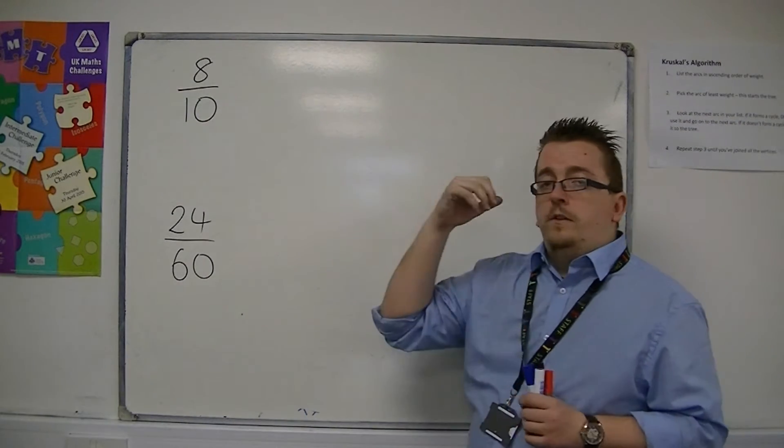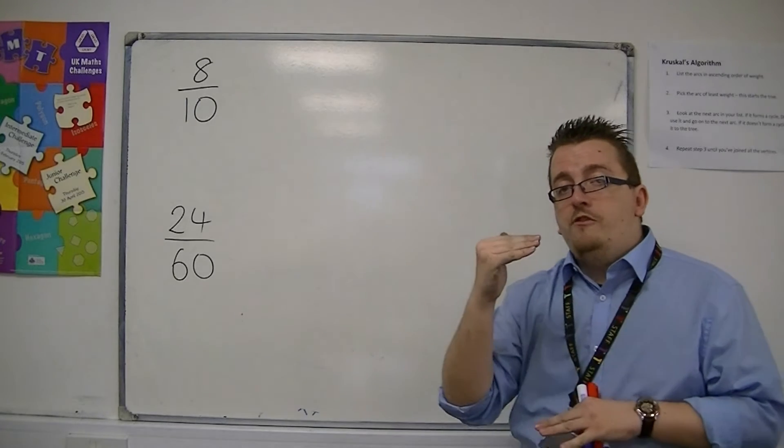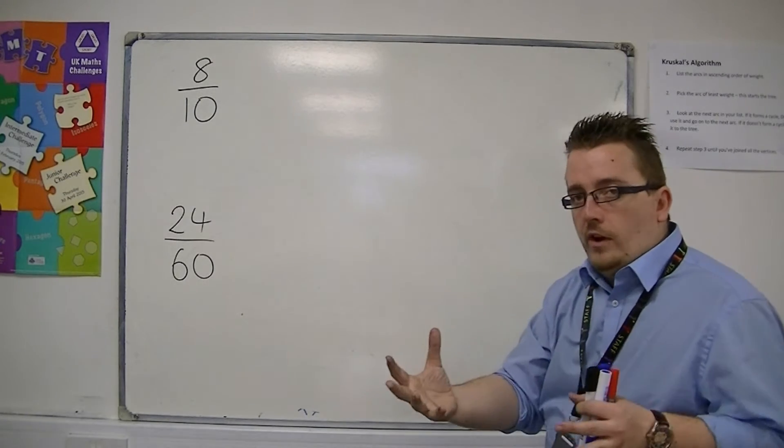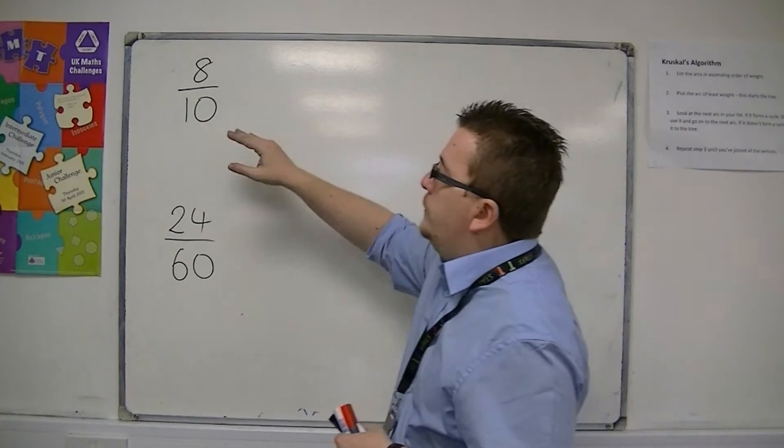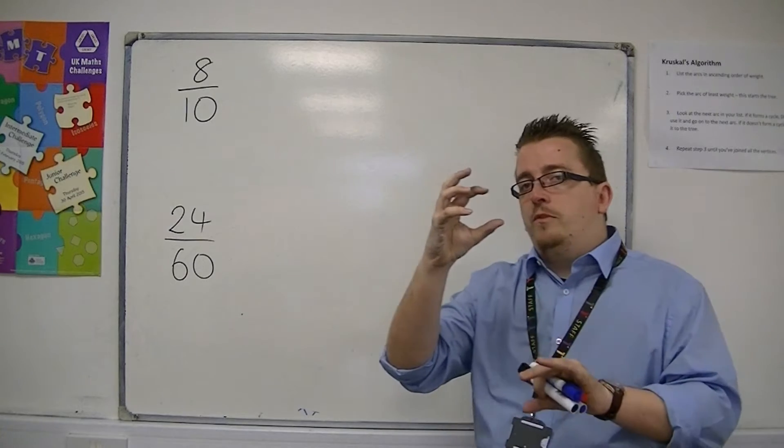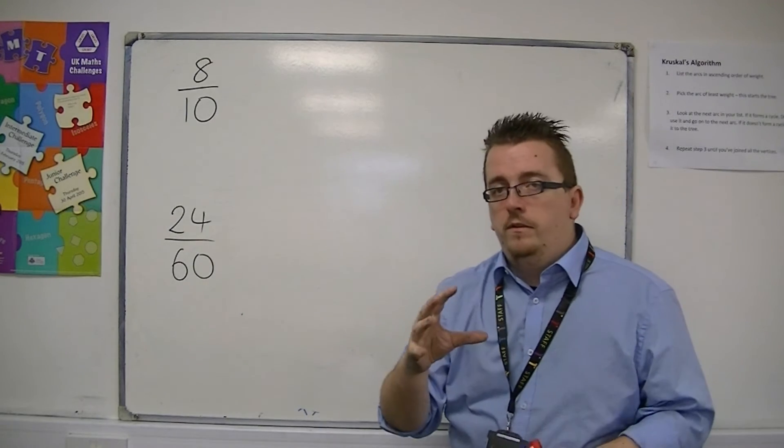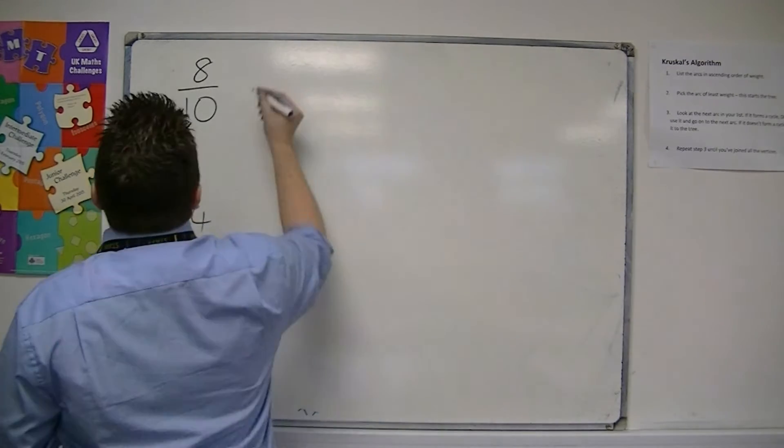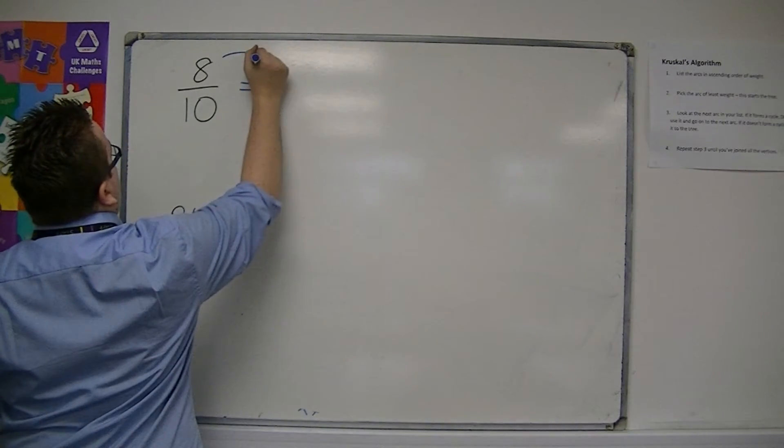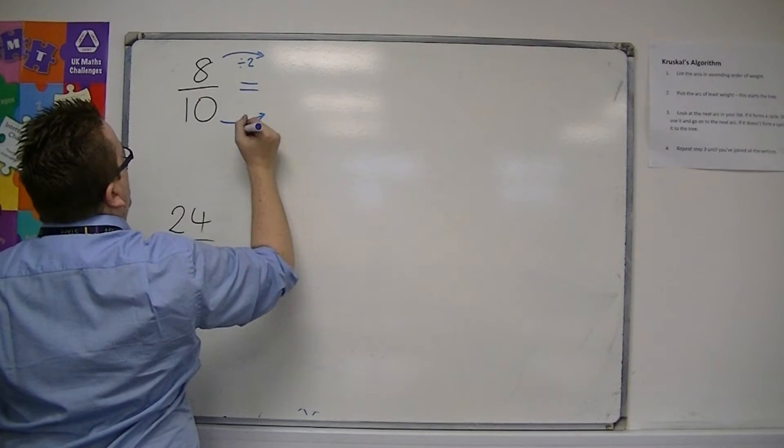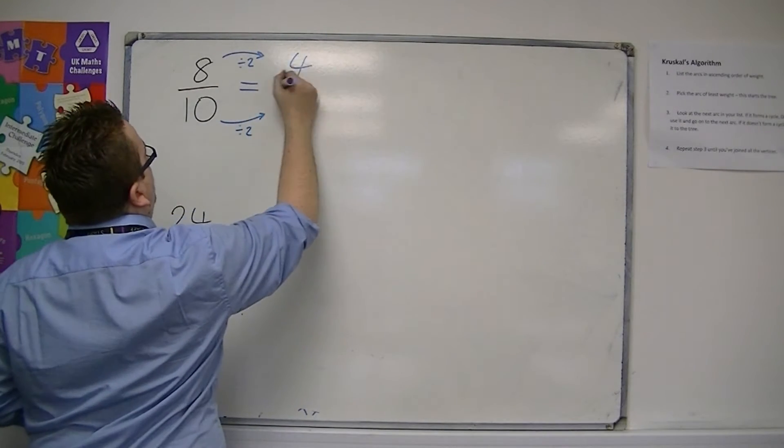Now you can divide both the top and the bottom of the fraction by any whole number you like. So 8 over 10, because both the top and the bottom of the fraction are even, you can halve both top and bottom. Divide top and bottom by 2. So if I divide the top by 2 and divide the bottom by 2, I'm going to get 4 over 5.